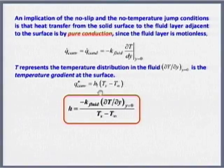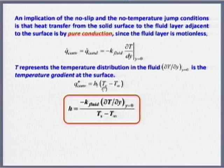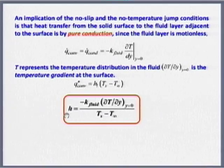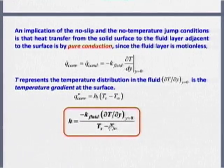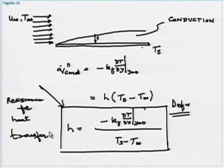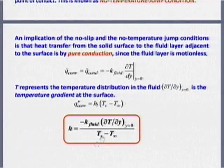The maximum temperature difference occurring is Ts − T∞, and that ratio to the temperature gradient within the thermal boundary layer decides the heat transfer coefficient. Think of H as something like resistance: in our conduction resistance networks, we have already introduced 1/(H·A) as the convective resistance. Higher H means lower resistance for heat transfer.